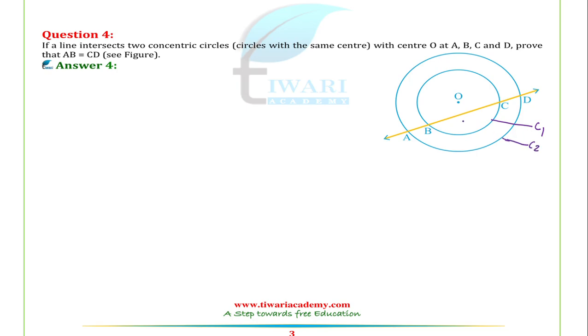C1 is the smaller circle, and BC is a chord of C1. AD is a chord of the larger circle C2. ABCD is a straight line, and OM is perpendicular to this line, so OM is perpendicular to both chords BC and AD.